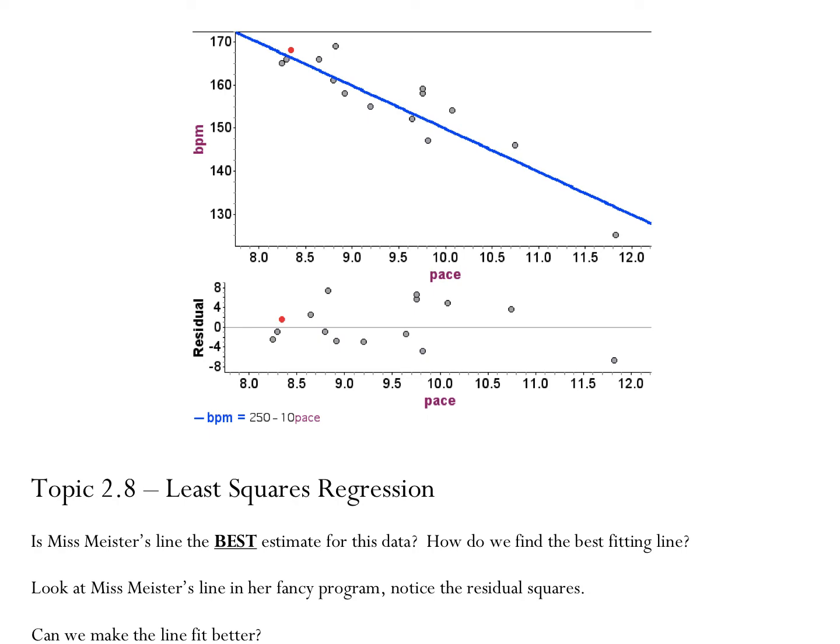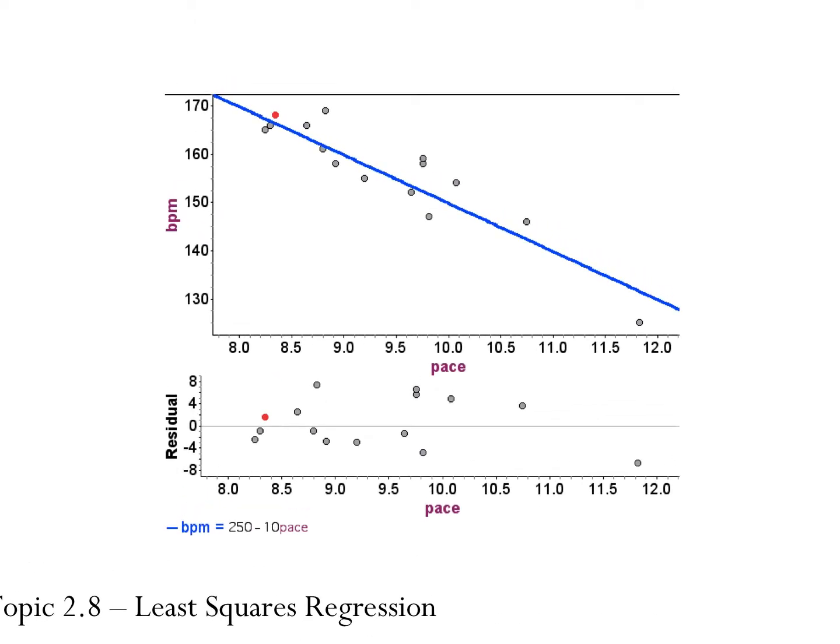All right, so yesterday we spent a lot of time working on this particular scatterplot with the line of fit. We even calculated residuals for each of these points, and if you think about it, what that residual is, is this distance is the residual for that point. It's essentially the distance between each point and the line.